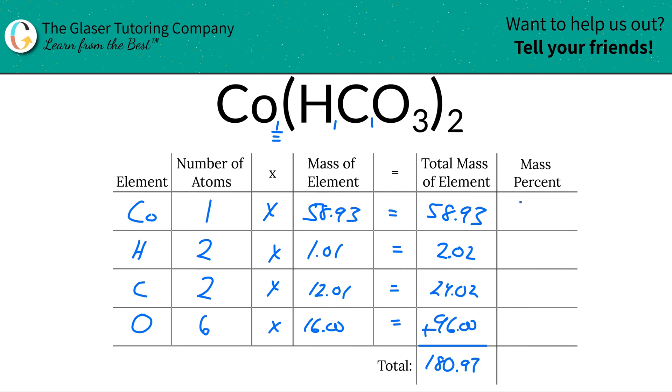So now to find the mass percent of, let's say, cobalt, we're simply going to take the total mass of cobalt here in the compound, 58.93, and then we're going to divide it now by the total mass of the entire compound. That's why we had to do that first. So this is 180.97.